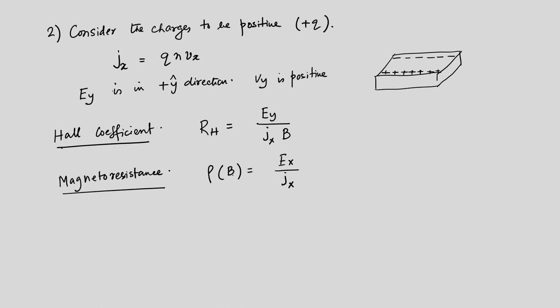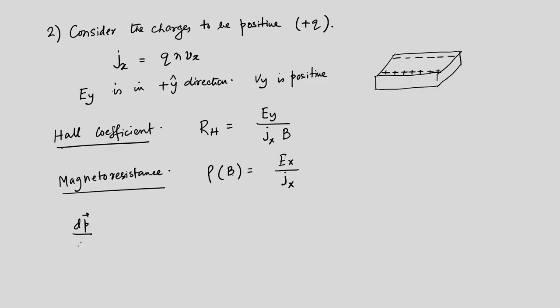The longitudinal resistance is independent of B. Once equilibrium is established, the Lorentz force gets balanced by the transverse electric field, which is why there is no dependence on the magnitude of the magnetic field. Now let us write down the classical equation of motion where there is a current in x and a magnetic field in z.